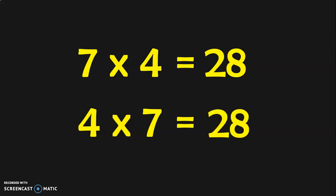So 4 into 7 is equal to 28. This is what the property says — two numbers can be multiplied in any order and the product or the answer that you get will remain the same. 7 into 4 is 28 and 4 into 7 is also 28.